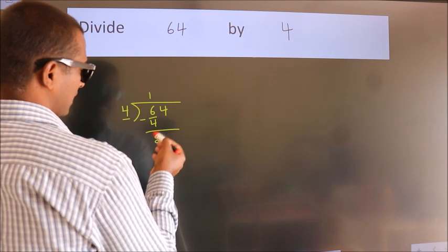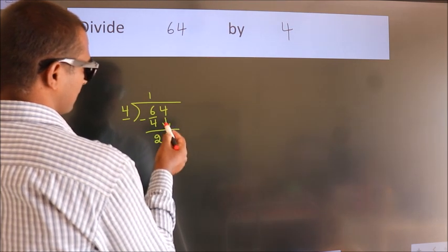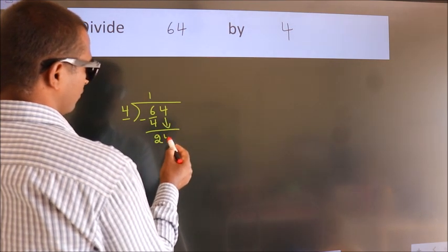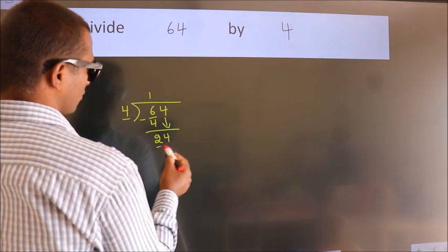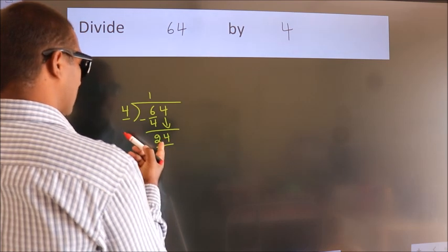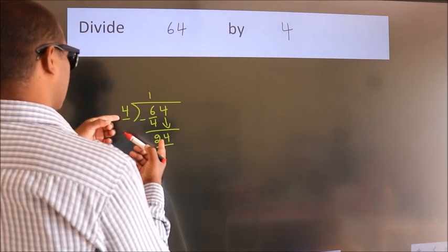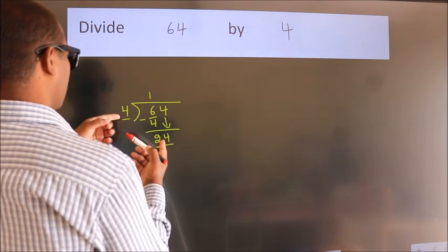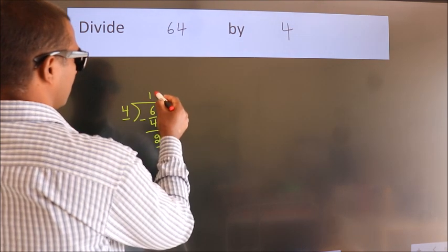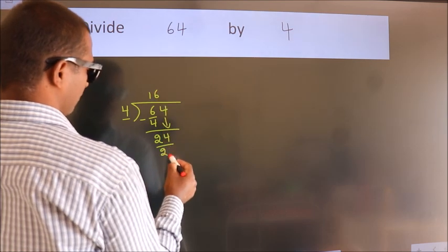After this, bring down the beside number — so bring 4 down, giving us 24. When do we get 24 in the 4 times table? 4 times 6 is 24.